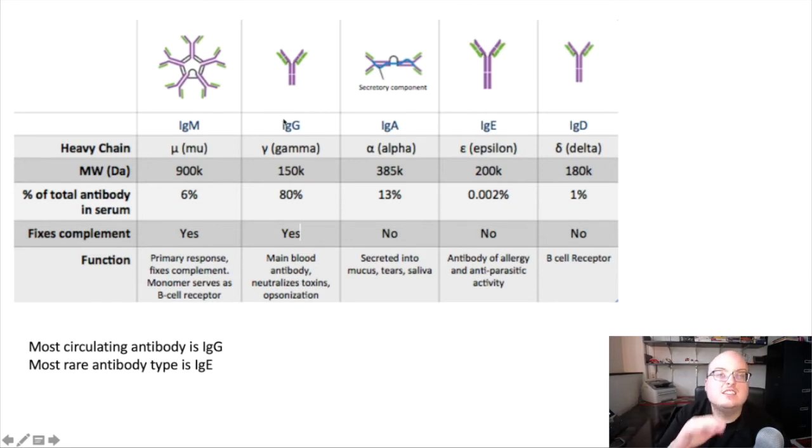For the most part, IgG is kind of the most stock, generic antibody. Often when we're talking about antibodies, you can sort of assume we're talking about IgG. And that's because over 80%, or around 80% of the total antibody concentration in the serum is made up of IgG antibodies. And they do most of the things that we've talked about that antibodies are important for. So they can lead to the fixation of complement, they can neutralize toxins, they opsonize things. So all of those antibody effector functions that we've focused on so far, most of them IgG can accomplish. And so it's kind of the most normal antibody.